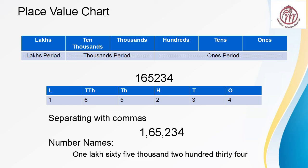To understand this, let's take another example. The number is 165234. We always start writing from the right side: 4 under ones, 3 under tens, 2 under hundreds, 5 under thousands, 6 under ten thousands, and 1 under lakhs. Now we will separate with commas. Lakhs period has 1, so comma after 1. Thousands period has 65, comma after that. We read 234 together under ones period. So the number name is 1,65,234.